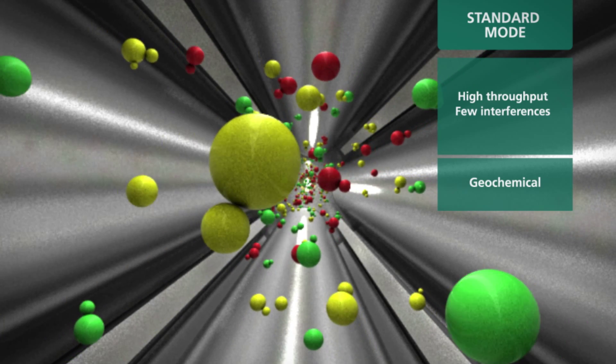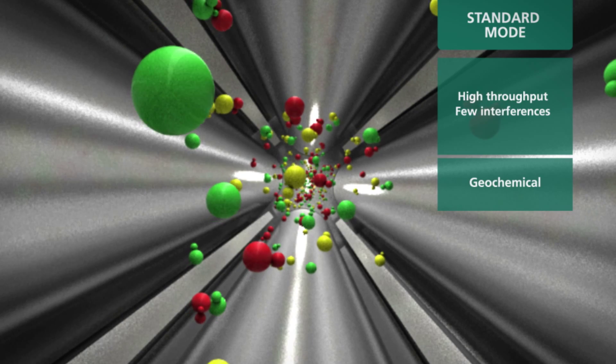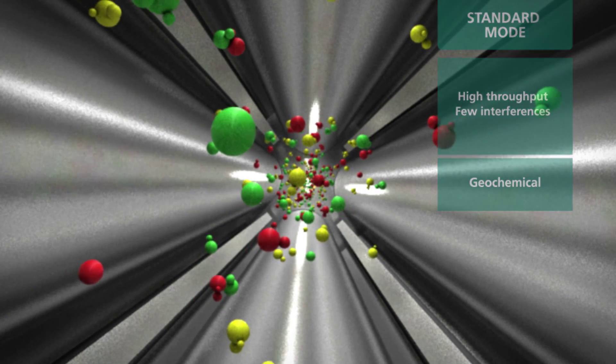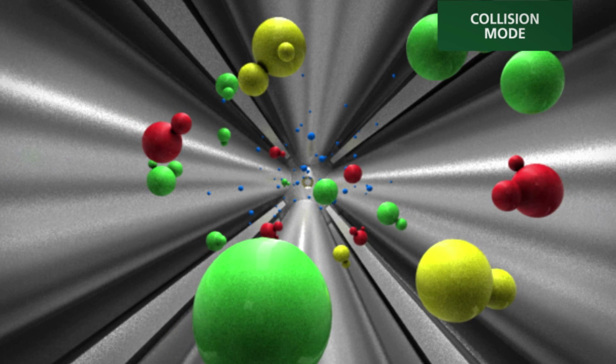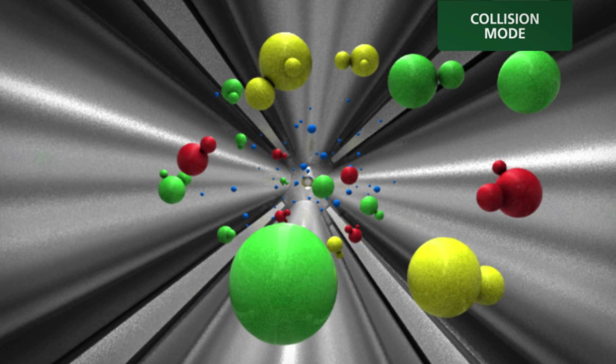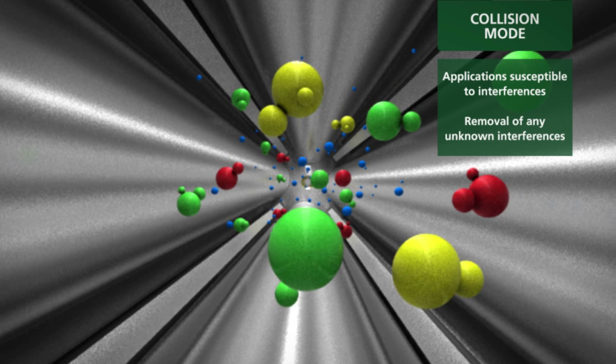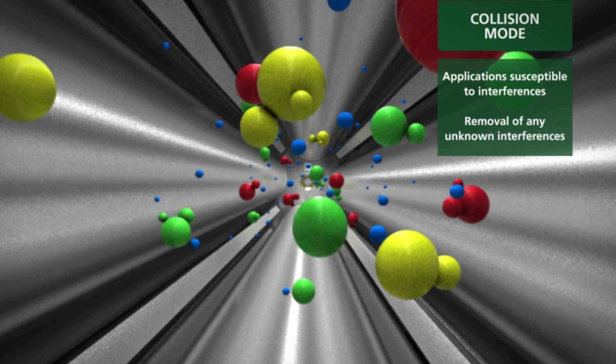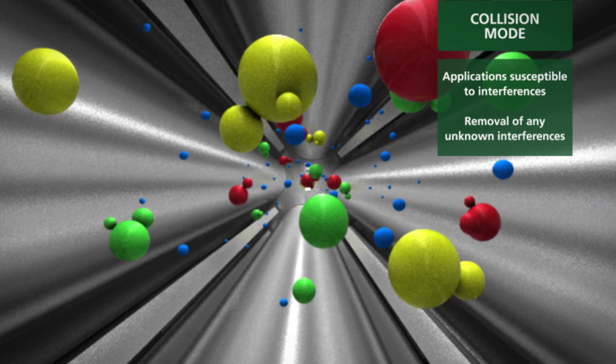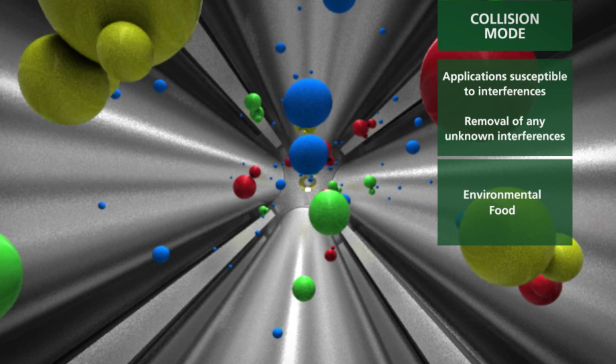If your application happens to be susceptible to interferences, or you just want the comfort of removing any unknown interferences, simply switch the instrument to collision mode. Using a simple non-reactive gas and kinetic energy discrimination, collision mode removes many interferences and provides better performance or improved detection limits than standard mode. Collision mode can be easily set up to run a variety of applications, including environmental and food safety.